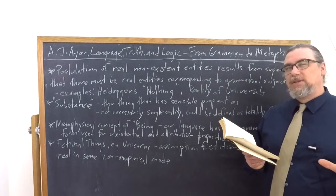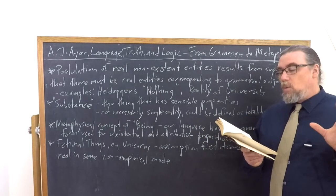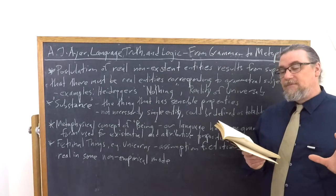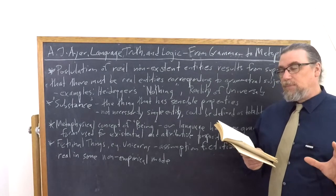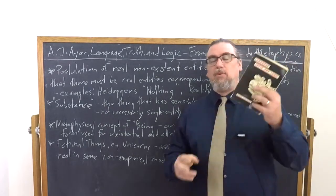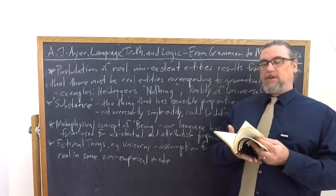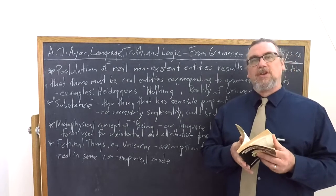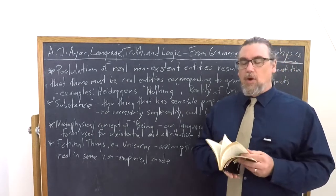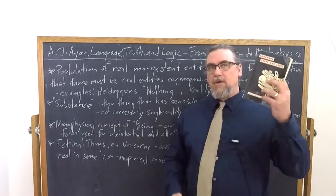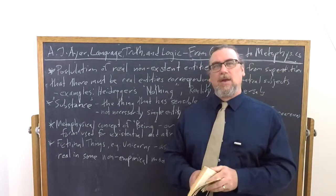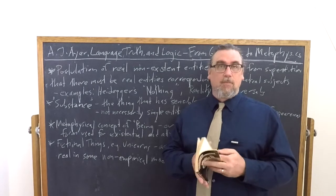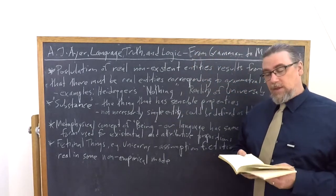He says there's two mistakes that we make here. One is thinking that it follows that the thing itself is a single and simple entity. This book could be understood as an assemblage of pages, for example. And there's no more reason for us to focus on the bookness, the unity of this than there is on the parts of it, I suppose, or the different qualities.